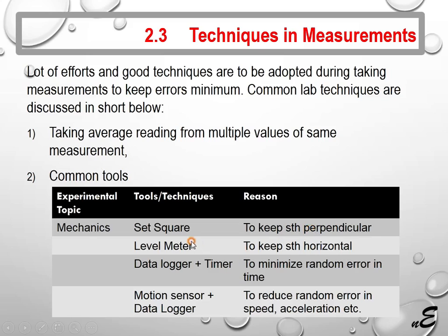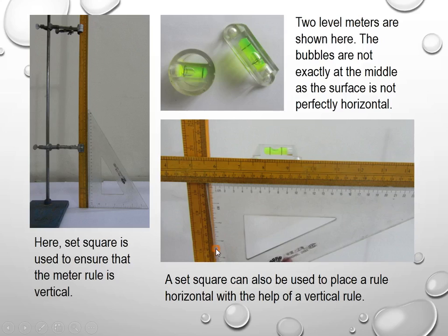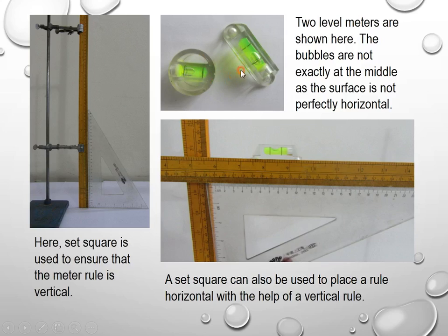A level meter is used to keep something horizontal. In the level meter, there is a bubble in liquid. When it is perfectly horizontal, the bubble is situated between the two marked lines. If the bubble is between these two lines, it confirms the surface is horizontal. Here we see the surface is not perfectly horizontal because the bubble is not between the two lines.